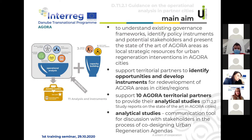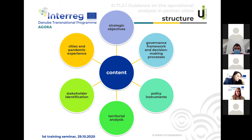Those analytical studies of territorial partners will be used as a communication tool for discussion with stakeholders in workshops when they will be designing urban regeneration agendas. The guidance is structured in six main chapters: strategic objectives, governance framework and decision-making processes, policy instruments development, territorial analysis, stakeholder identification, and citizen pandemic experience.